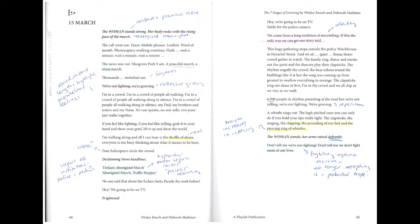We come from a long tradition of storytelling. If this is the only way we can get our story told — this huge gathering stops outside the police watch house in Herschel Street and we sit, quiet. The Roma Street crowd gathers to watch. The family sing, dance, and smoke out the spirit, and the dancers play their clapsticks. The rhythm engulfs the crowd, the beat echoes round the buildings.